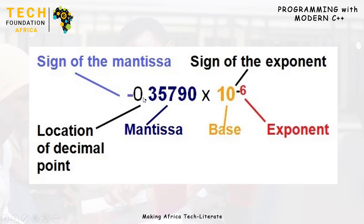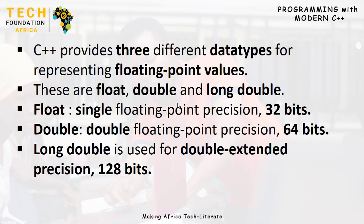A typical floating point number like minus 0.35790 times 10 to the power minus something has a sign of the mantissa, digits after the decimal point (the mantissa), a decimal point, a base which is usually base 10 (represented in C++ by an 'e'), an exponent, and a sign of the exponent. So this is the basic structure of every floating point number. Much of the emphasis is on how many decimal places — the significant number of digits — that can be represented after the decimal point.